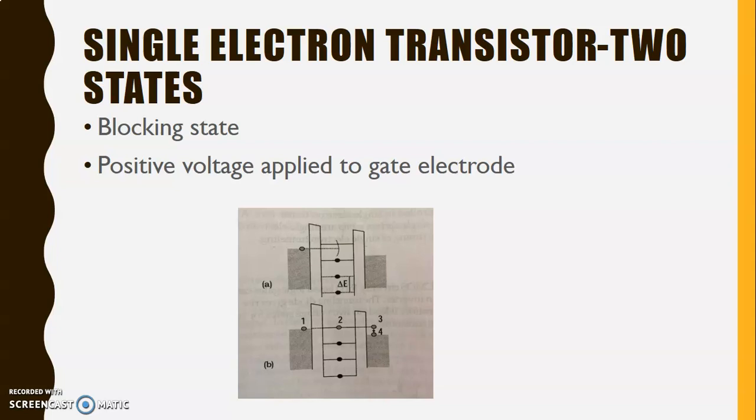That is, no accessible energy levels within the tunneling range of electron on the source contact. Look at the second figure: what happens? Energy levels of the island electrode are lower and the electron can tunnel into the island, occupying the precisely vacant energy level.